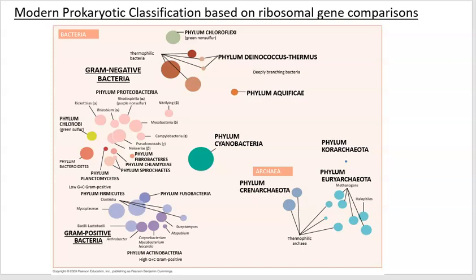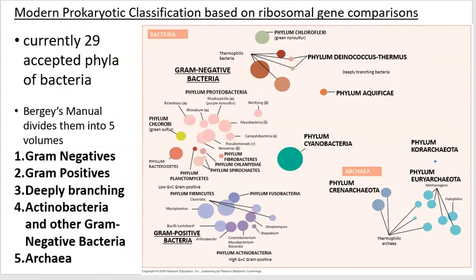You can look at things like cell shape, arrangement, and structures in the cells. What about their metabolism — what do they eat, what do they produce, do they need oxygen? All of these can come into our taxonomic classification for these different kinds of microbes.